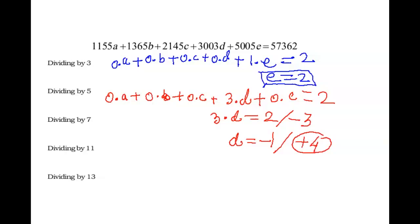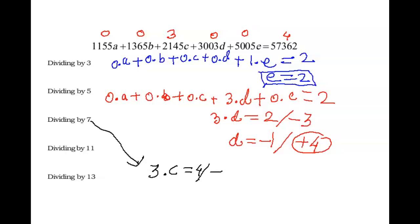Dividing by 7: the first and second numbers give remainder 0. But 2145 gives a remainder of 3 with 7 (since 21 and 42 are multiples). The remaining numbers give remainder 0. The overall remainder of 57,362 divided by 7 is 4. So the equation is 3 × c = 4. The positive remainder is 4, so the negative remainder is minus 3. Then 3 × c = minus 3, giving c = minus 1. A negative remainder of minus 1 means a positive remainder of plus 6, so c = 6.